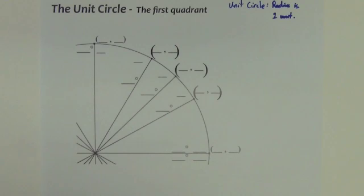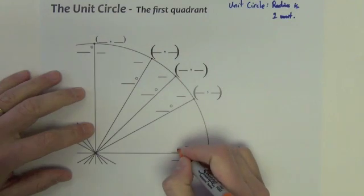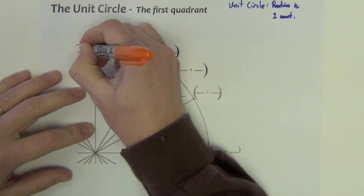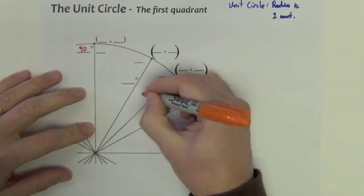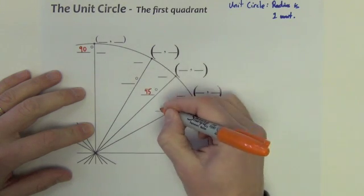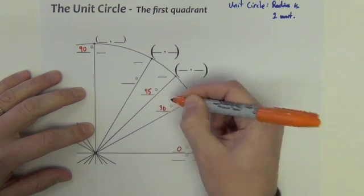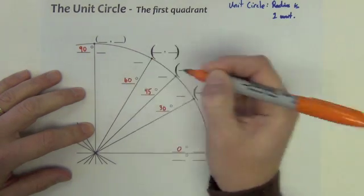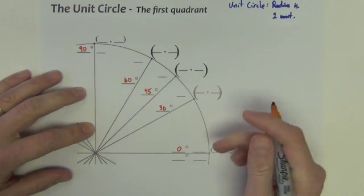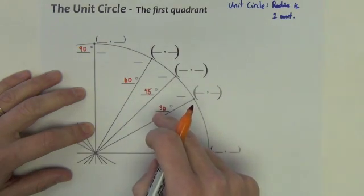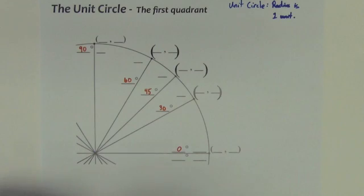Let's fill in some of the stuff we know so far. This is zero degrees, this is 90 degrees, right in the middle would be 45 degrees, and these two other lines are every 30 degrees — this is 30 degrees and 60 degrees. Those of you thinking ahead, you're going to see why we did the 45-45 and the 30-60-90 triangles just prior to this — they're going to come into play here.